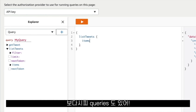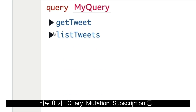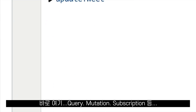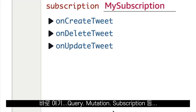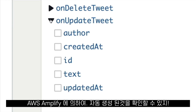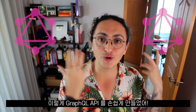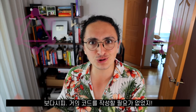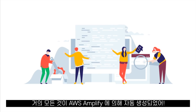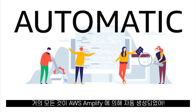We also have queries as well. Here we can see the queries, the mutations, and the subscriptions that have been created for us automatically by AWS Amplify. And that's it — we now have a GraphQL API. As you saw, we didn't have to write almost any code. Everything was generated for us automatically by AWS Amplify.